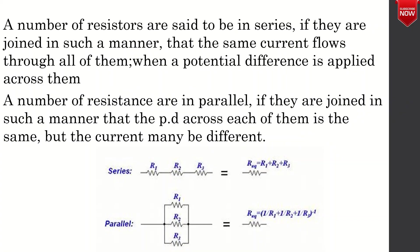A number of resistors are said to be in series if they are joined in such a manner that the same current flows through all of them when a potential difference is applied across them.